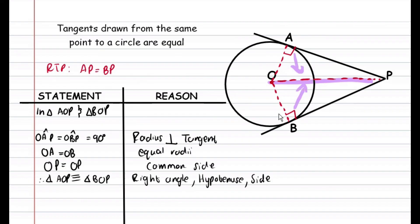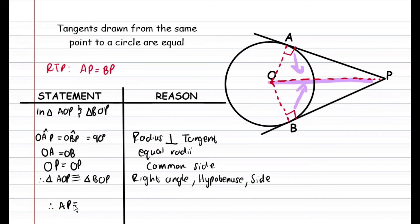Since they are congruent — congruency means two triangles are exactly the same in both the lengths of their sides and their angles — every corresponding side of these triangles is equal. We already know OB equals OA and OP equals OP. Now that concludes that AP is equal to BP. Therefore, AP is equal to BP, and our reason for that is congruent triangles.